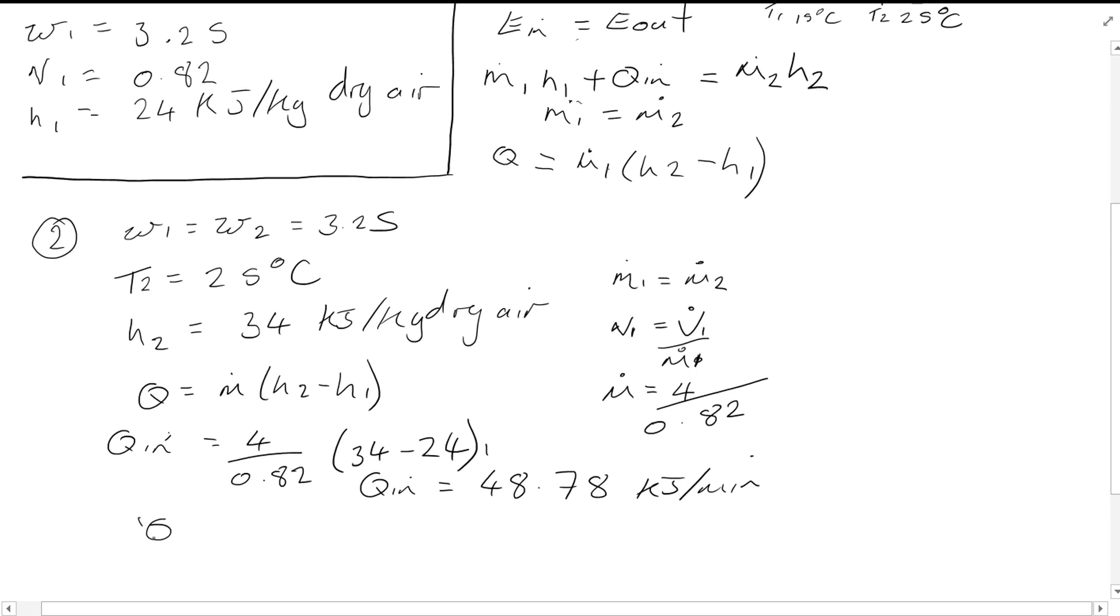All that's left to find is the relative humidity at point 2, which you can easily find using chart A31, and you will find 17.5%. If you're struggling to use the chart, please refer to the earlier videos.